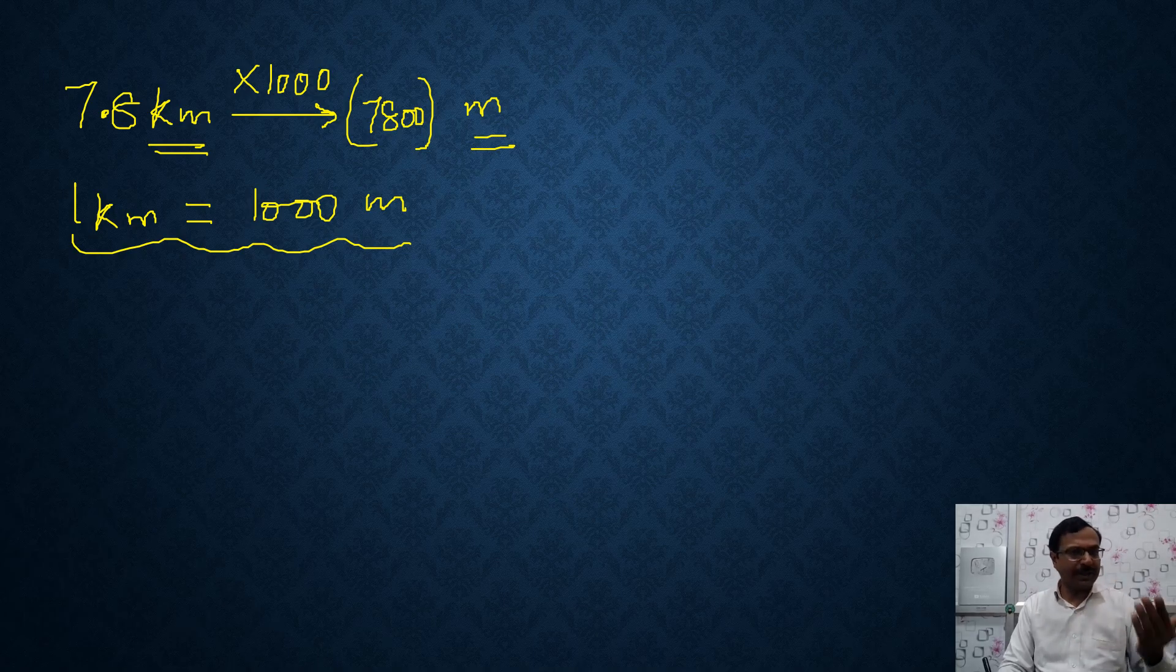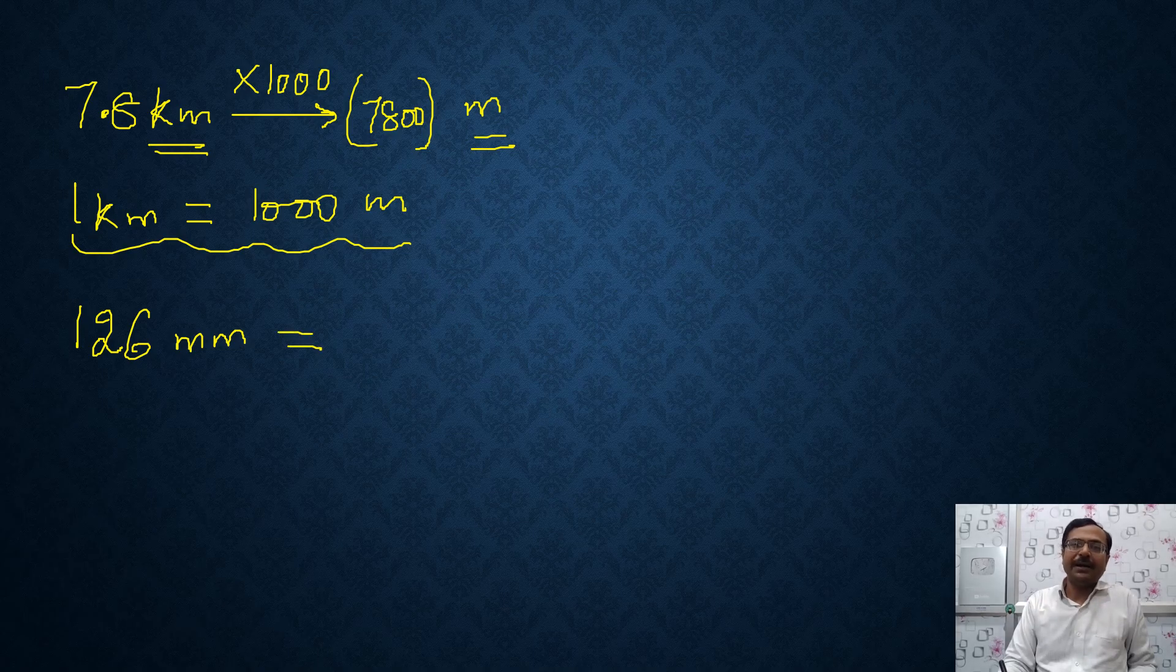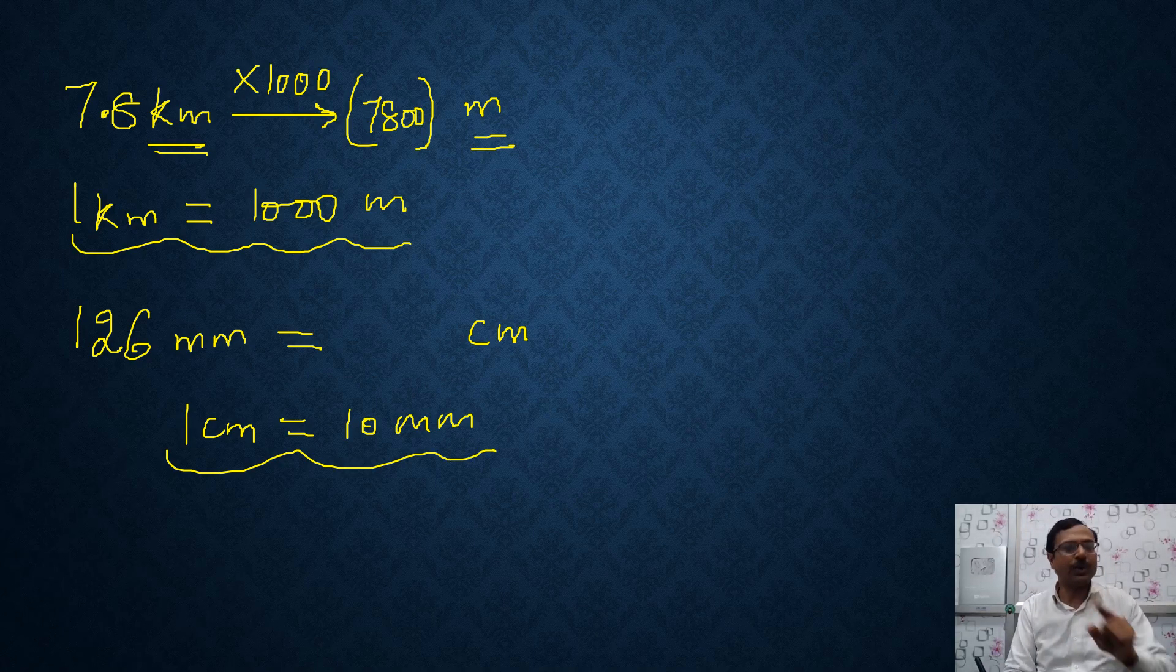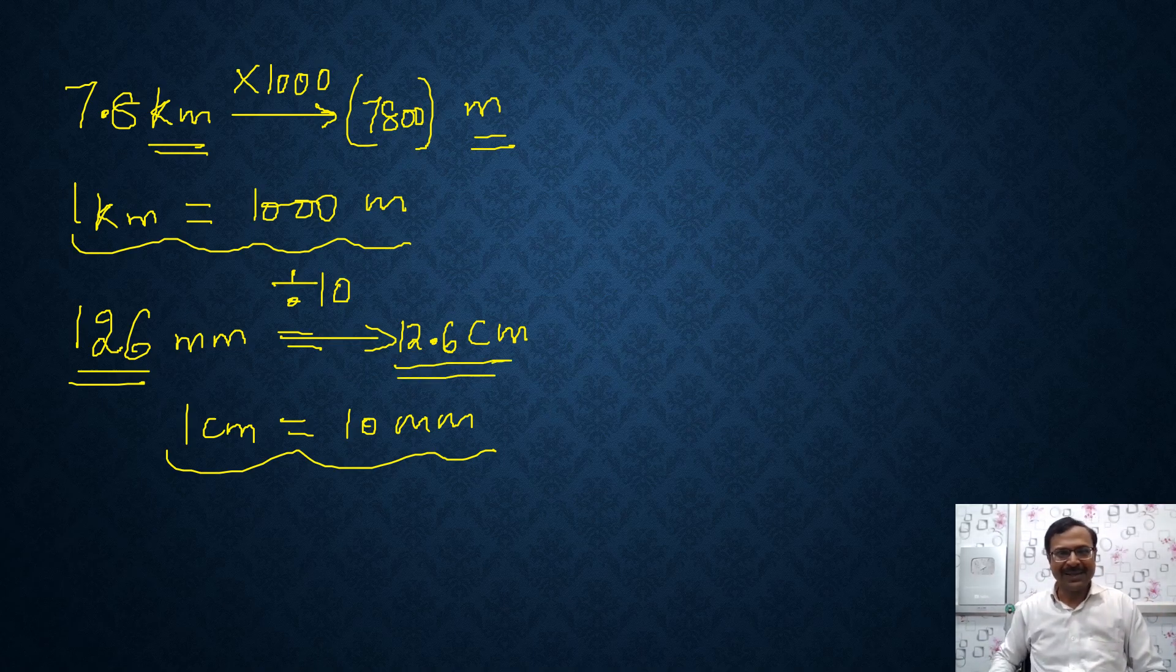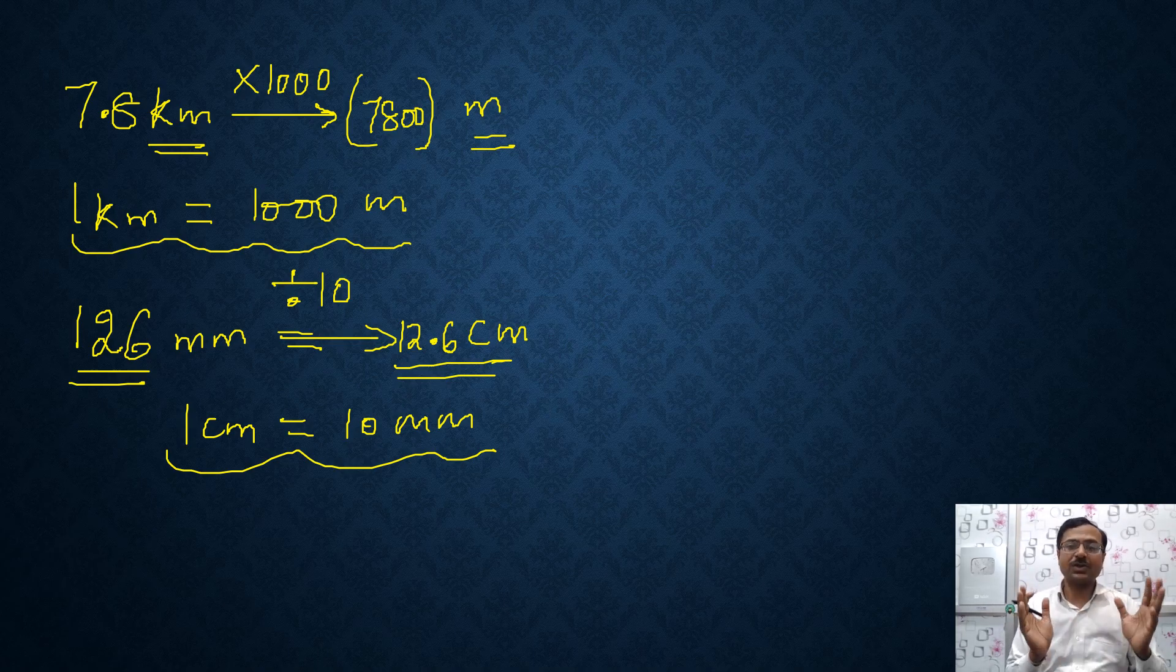So I'll take the other example, the example the other way around. Let's have a small unit now. Now we have say 126 millimeters and I want to convert that into centimeters. Now see millimeter is a very small unit and centimeter is a large unit. So obviously I have to divide that by something. Now I know that one centimeter has 10 millimeters. You must have seen on the scale one centimeter has 10 small units between it. So 10 millimeters. So I will divide this by 10 to get my answer in centimeters. So if you divide 126 by 10, you are going to get 12.6. So 12.6 centimeters is the answer. Very easy.